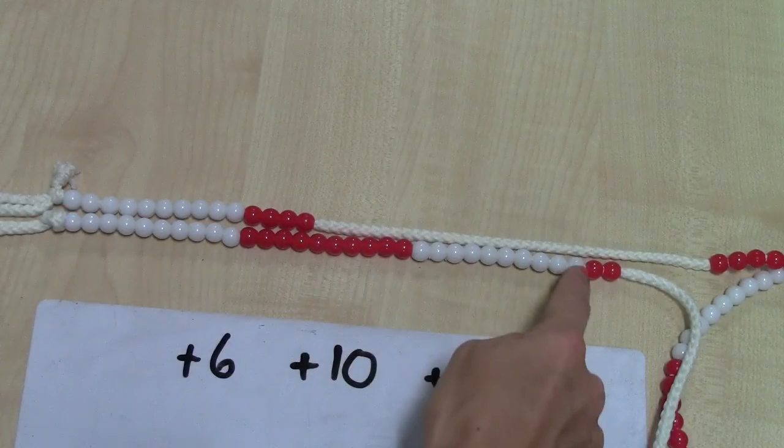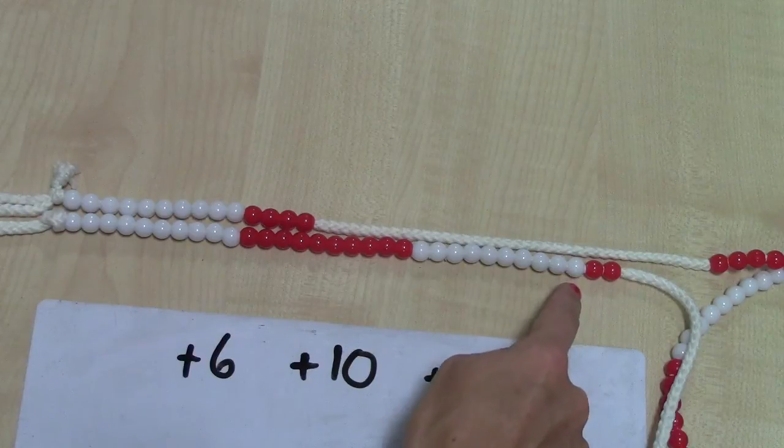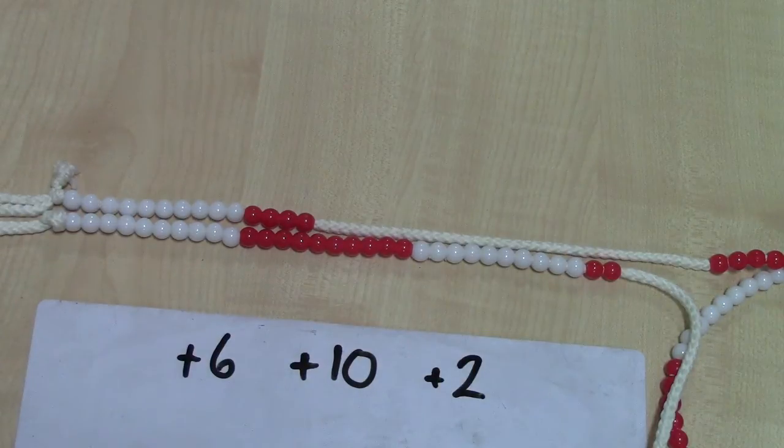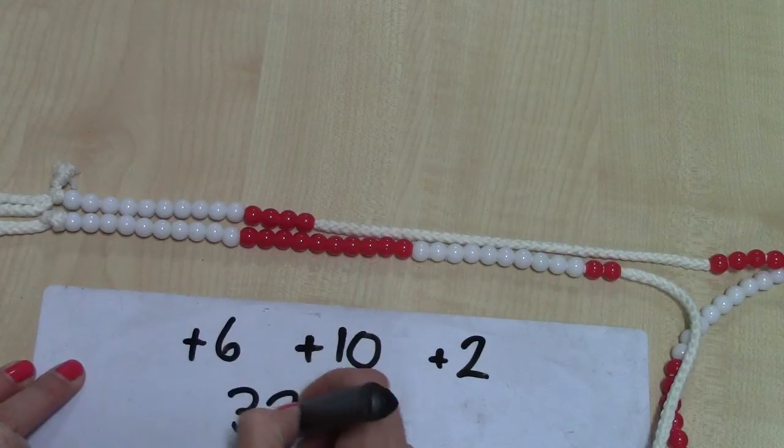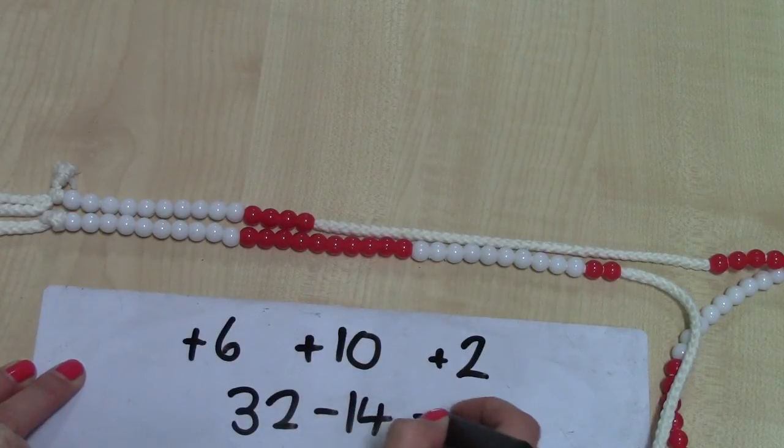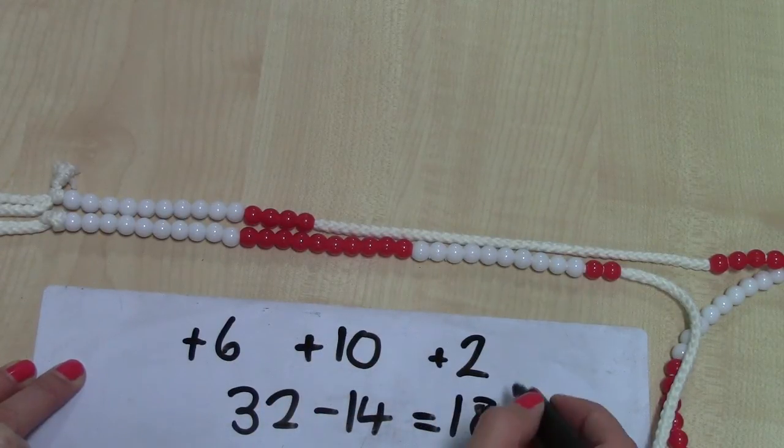So the difference between 14 and 32 is 6, add 10, which is 16, add 2, which is 18. So the difference between 32 and 14 is 18.